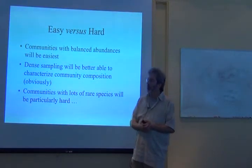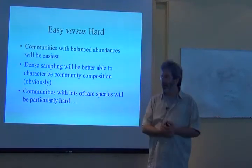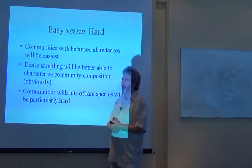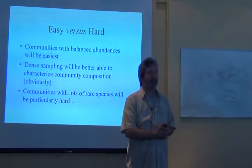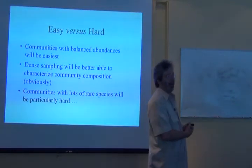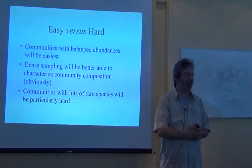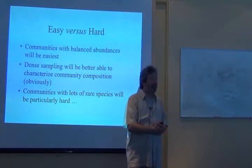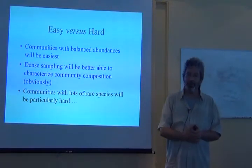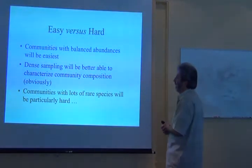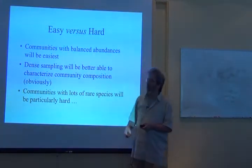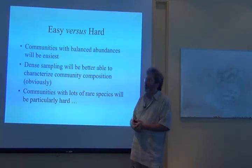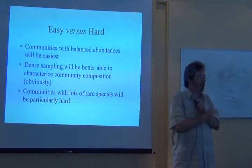In the afternoon, we're going to do an exercise where each of you is going to sample a fauna and tell me how complete your inventory is. Given that it might rain in the afternoon and most of us don't know the local fauna or flora, we're going to sample little bits of paper out of a plastic bag. I've created big communities, moderate-sized communities, and little communities, and communities with balanced abundances versus communities with lots of rare species, to see how these metrics respond to community size and balance of abundances.